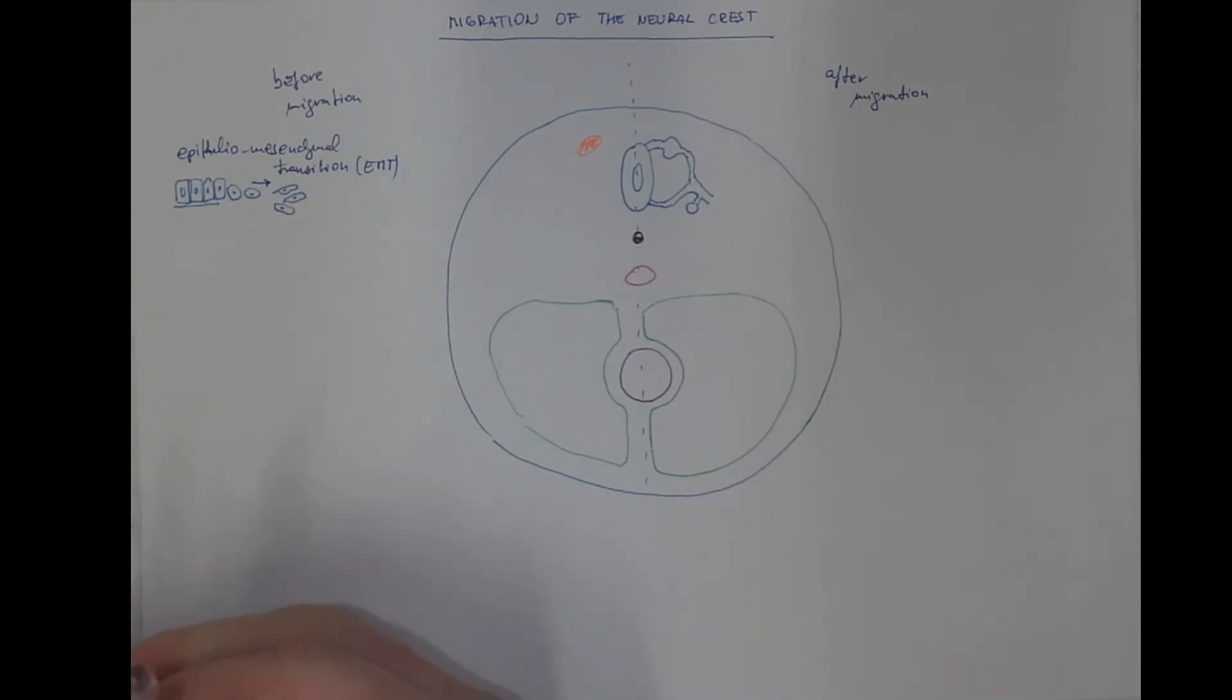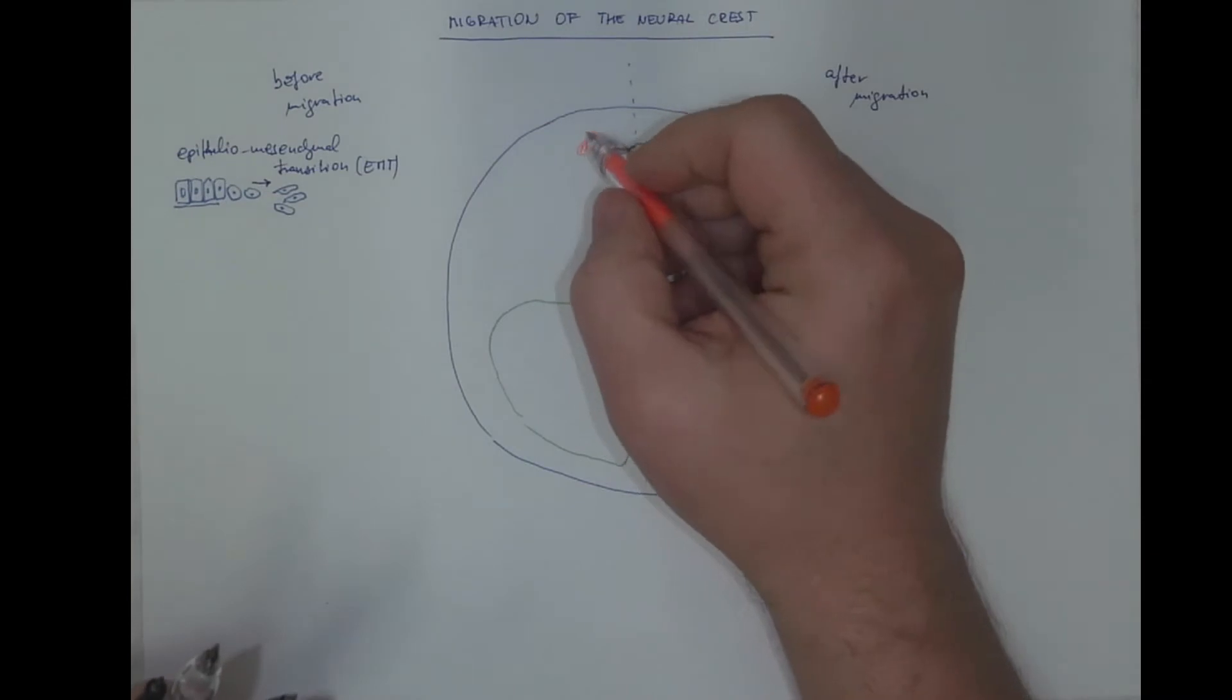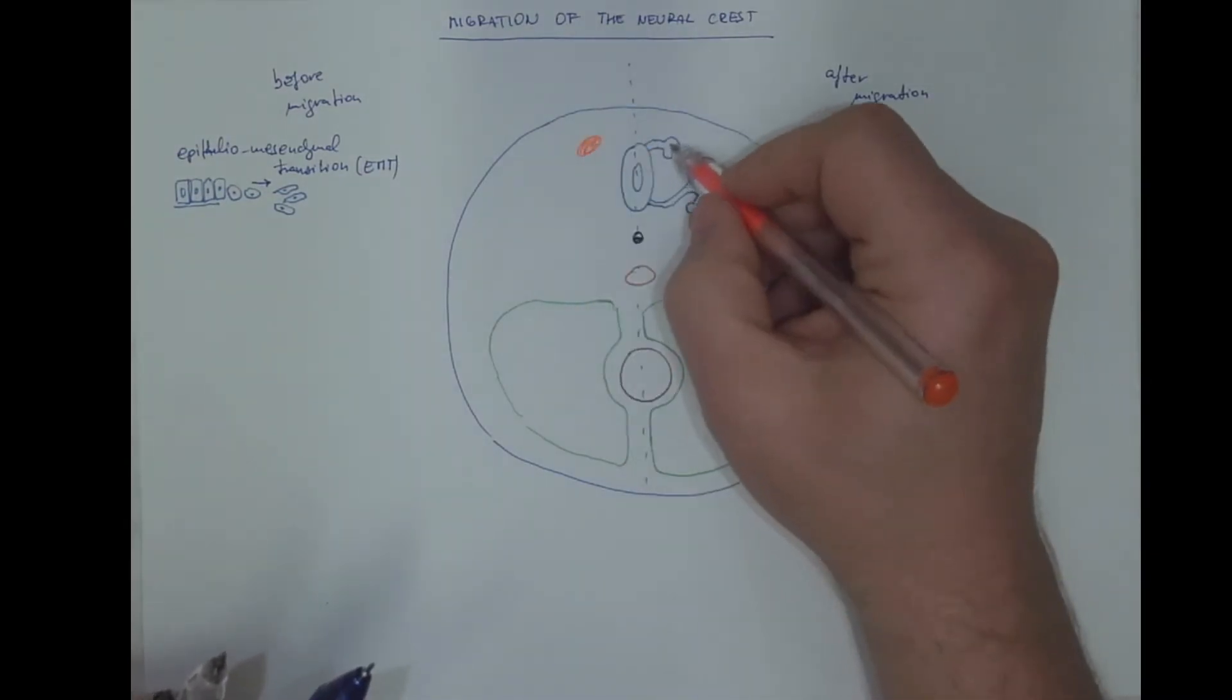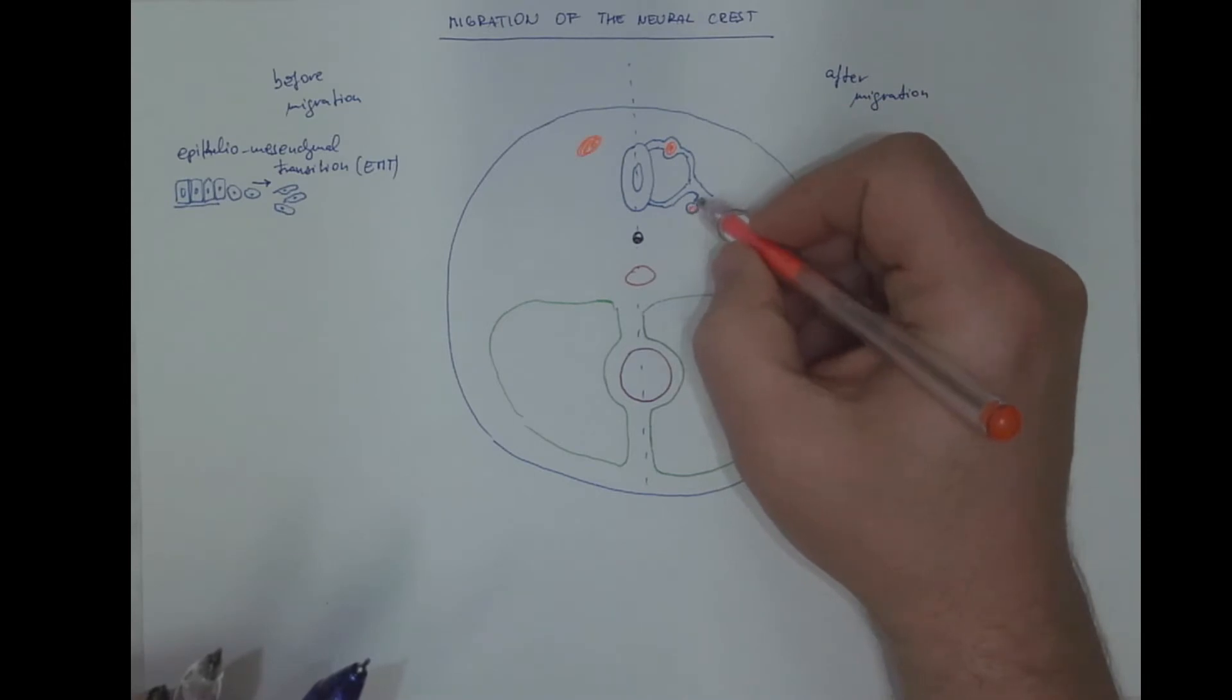Some cells will remain close to the original position and they will form the spinal ganglia and also the ganglia of the sympathetic trunk.